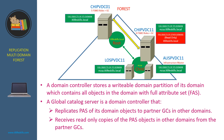Similarly, the global catalog server in the child domain will replicate its domain objects, but only with partial attribute set, to the global catalog server in the root domain. After the replication, the global catalog server in the root domain has the writable partial attribute set objects of the child domain ncsa.it-live-skills.local, and the global catalog server in the child domain has the writable partial attribute set objects of the root domain it-live-skills.local.